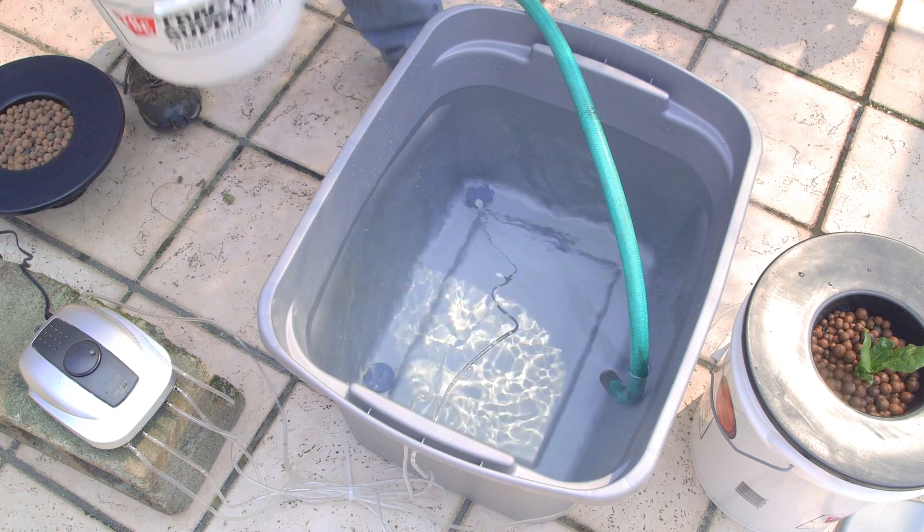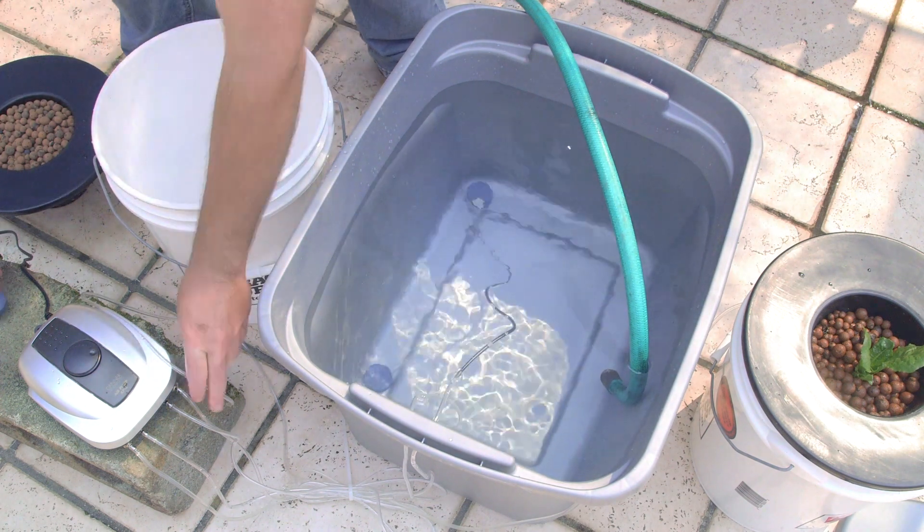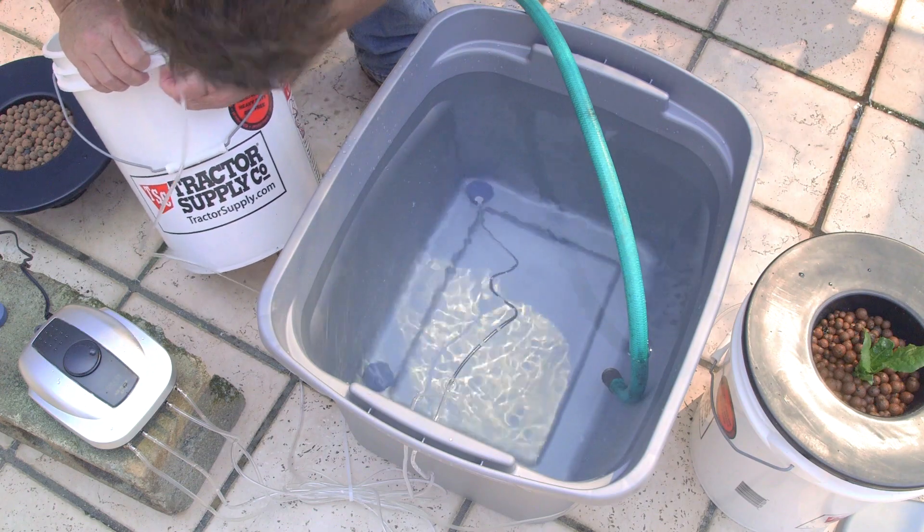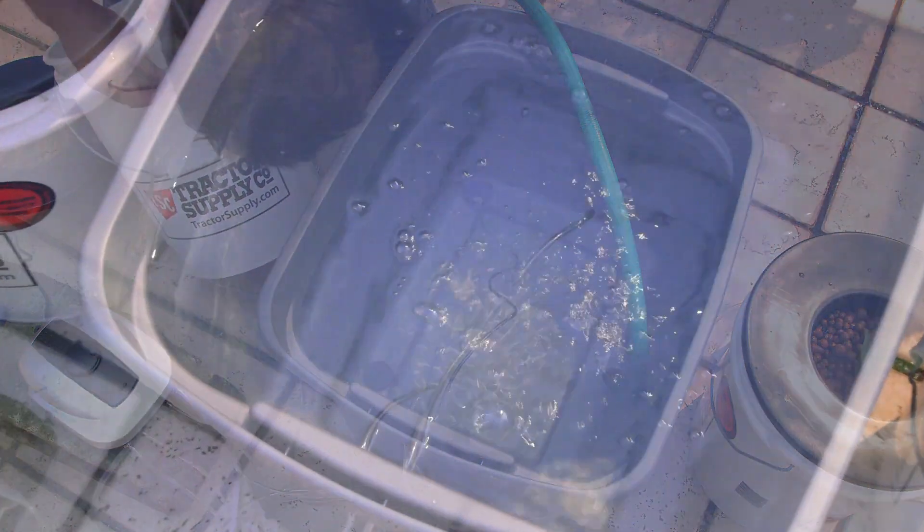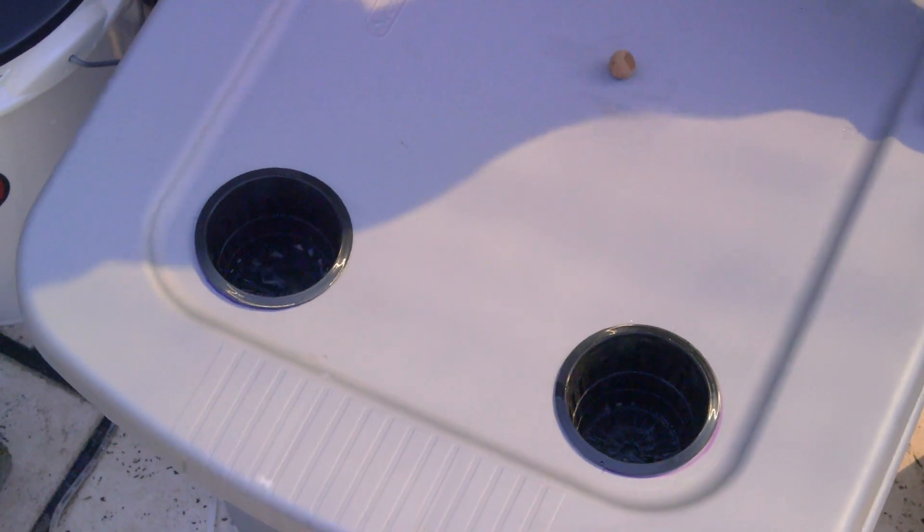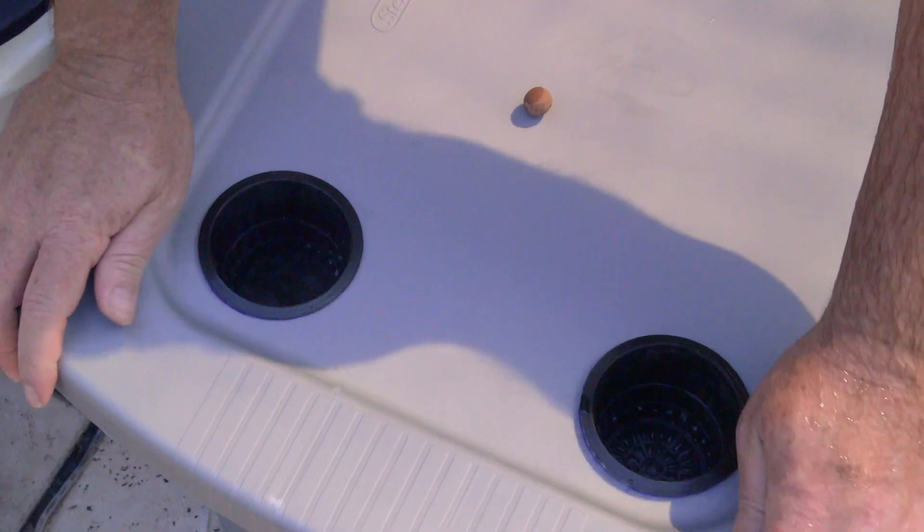You want to make sure that you're getting at least a third of the way up your net pots. And a third to a half of the way is ideal. This deep water culture system is not like the ebb and flow. The water's going to stay in there all the time. So you want to have room for your roots to have oxygen above the water, as well as be able to access the water within there. So keeping that water level at the right place is critical.